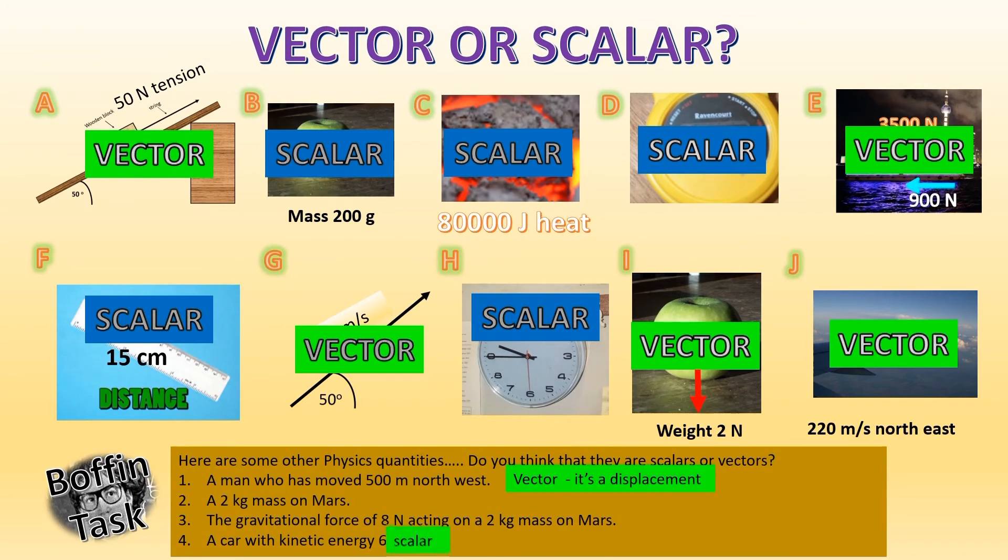And here we've given a force. We've got some Newtons, so we're talking about the force acting on a mass. Force acting on a mass on Mars. Don't care where it is, it's a force. It's going to be a vector quantity. And finally, we're given an energy. We've got some joules. Energy, joules, big clues. Got to be a scalar. Right, I'm off to eat some food. Don't know about you. Time for a break. See you again soon.